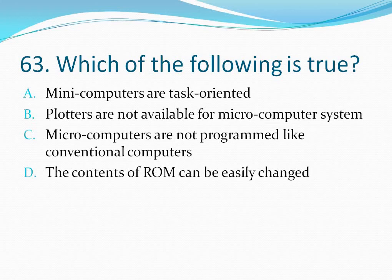Question number 63: Which of the following is true? Option A mini computers are task oriented, option B plotters are not available for micro computer systems, option C micro computers are not programmed like conventional computers, option D the contents of ROM can be easily changed. The correct answer is option A — mini computers are task oriented.